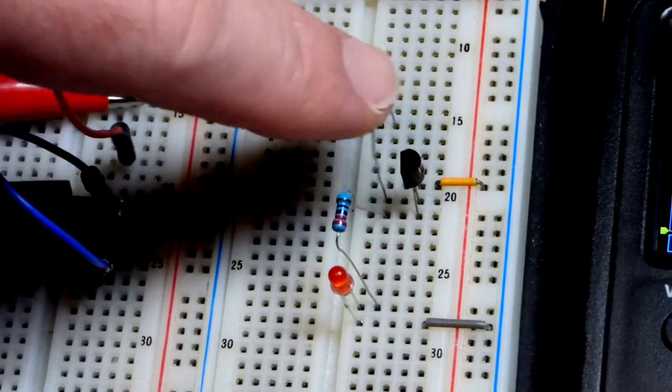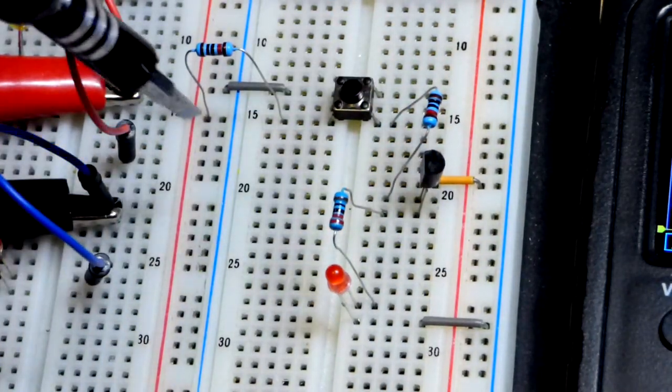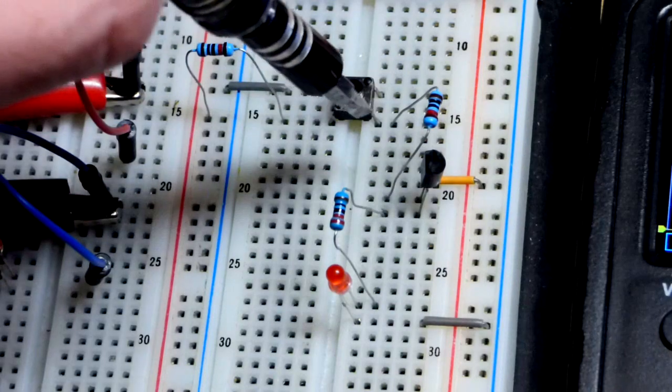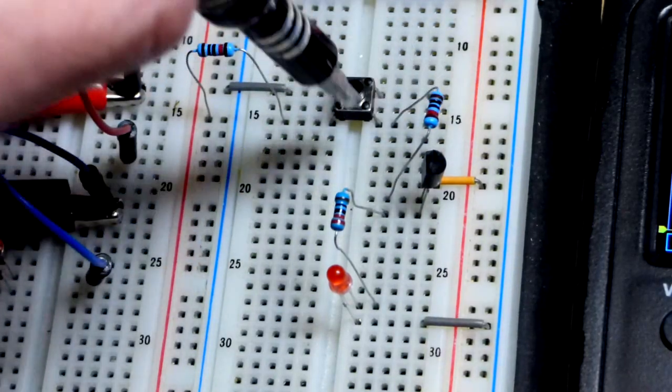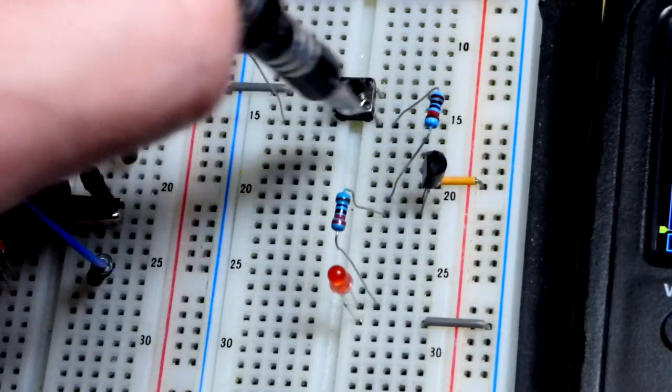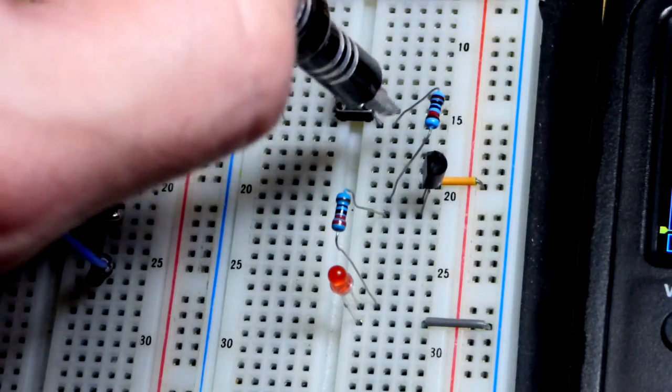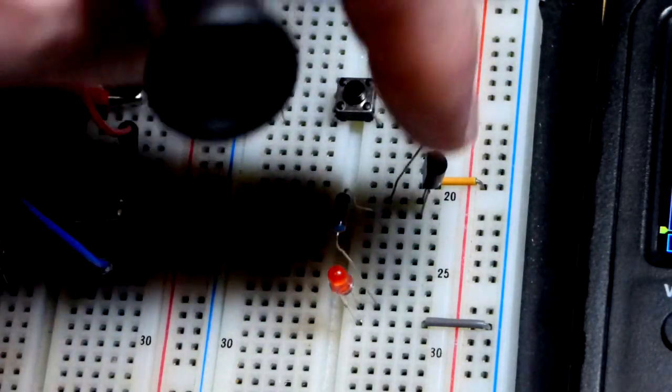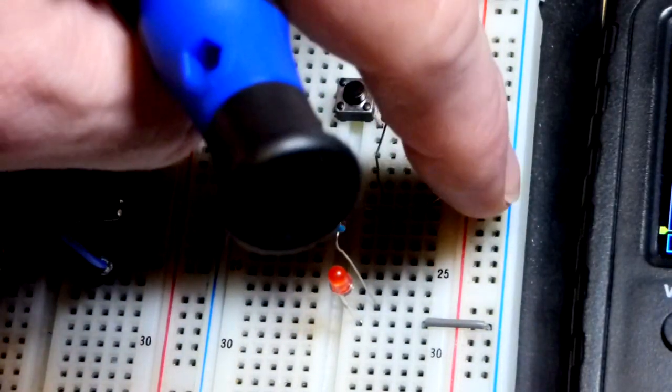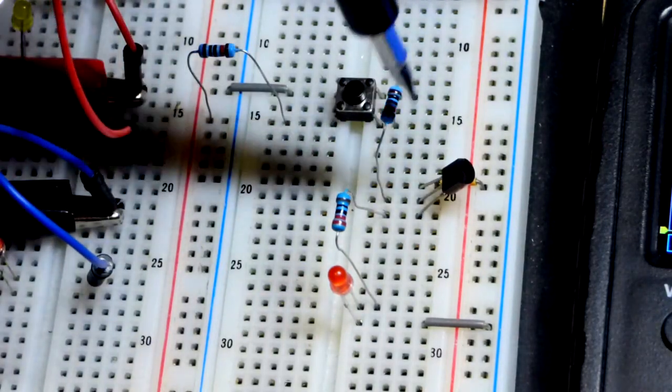So now here we have the circuit right there. You can see our pull-up resistor, 10 kilo ohm, coming to that other 10 kilo ohm. The switch automatically jumps the gap right there.